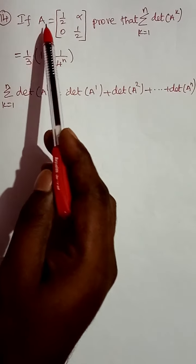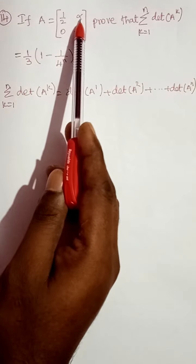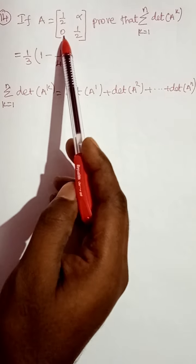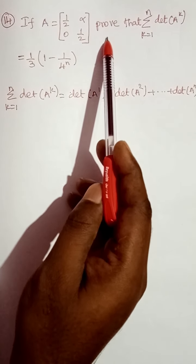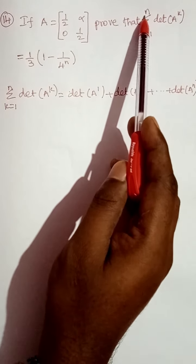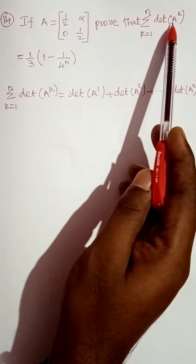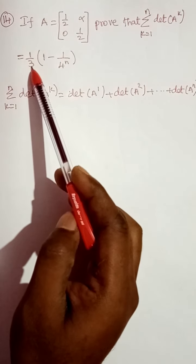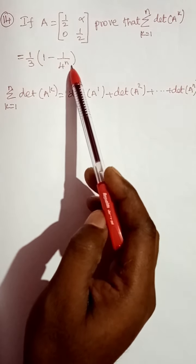Good morning students. Today we are going to discuss Exercise 7.2, question number 14. If A is equal to the matrix [[1/2, α], [0, 1/2]], prove that summation k equal to 1 to n of the determinant of A power k is equal to 1/3 into (1 minus 1/4^n).